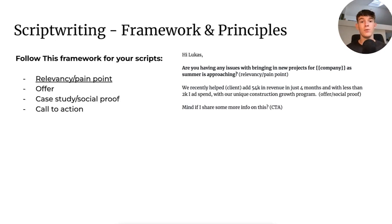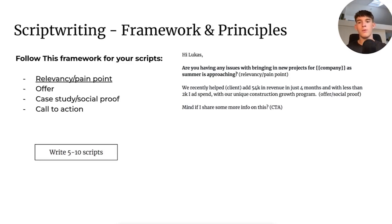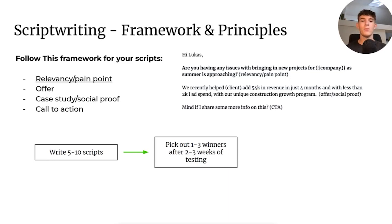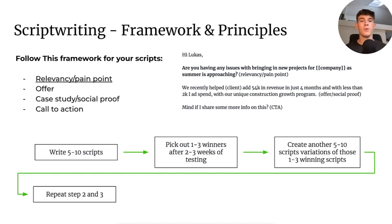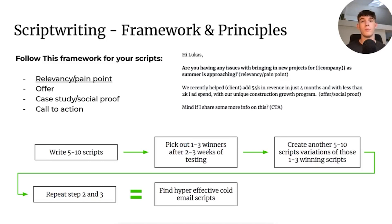If they say yes to you sharing some more info, you will share that info and then after that you can try to book them onto a call. Once they've said yes to the info, you know they are actually interested in what you do. Now, here are the actual principles we follow: write five to ten different scripts with this framework, then pick out one to three winners after about two to three weeks of testing when you have enough data. Then create another five to ten variations of those winning scripts. Simply repeat until you have hyper-effective cold email scripts. The first line — saying something relevant to your ICP — is the most important aspect of your cold email, so that is what you want to be testing the most.